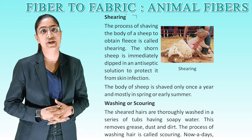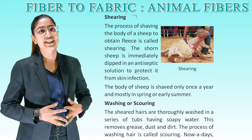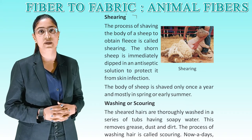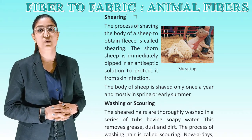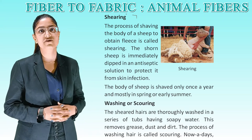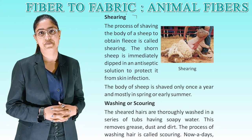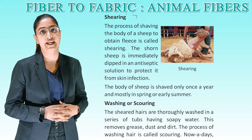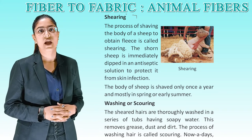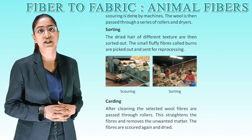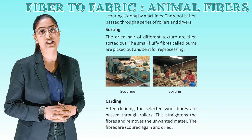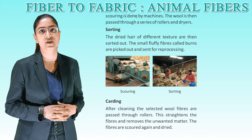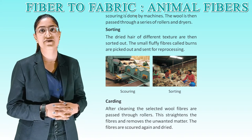Washing or scouring: the sheared hairs are thoroughly washed in a series of tubs having soapy water. This removes grease, dust, and dirt. The process of washing here is called scouring. Nowadays, scouring is done by machines. The wool is then passed through a series of rollers and dryers.